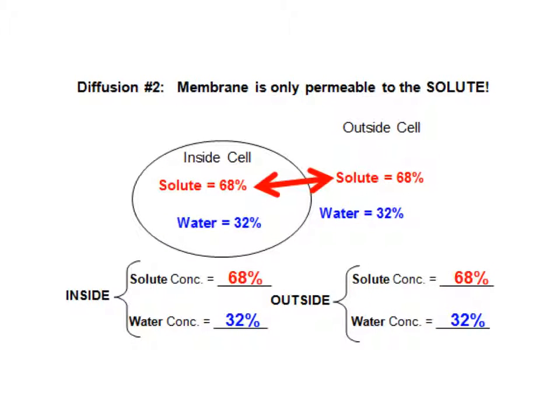In example number two, which is also diffusion and again talking about the solute moving, we see that inside of the cell there's a concentration of 68% solute and 32% water. Outside is the same. So therefore these areas are isotonic, or they're in equilibrium, which means the solute can pass freely back and forth, maintaining equilibrium.